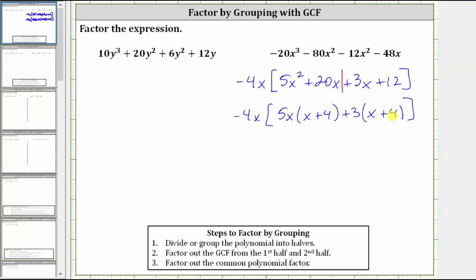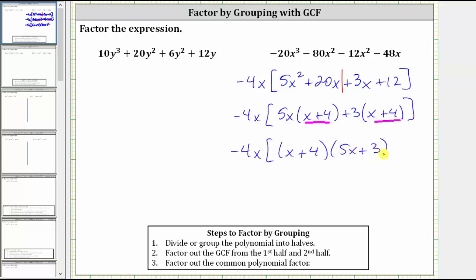Notice how we do have a common binomial factor of x plus 4, which we now factor out of the two products. So we have negative 4x times — factoring out x plus 4 — which leaves us with the factor of 5x plus 3. This is factored completely. We can drop the brackets and write the final factored form as negative 4x times the quantity x plus 4 times the quantity 5x plus 3. I hope you found this helpful. Thank you.